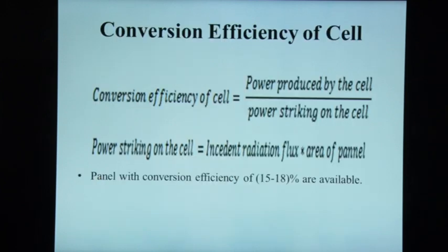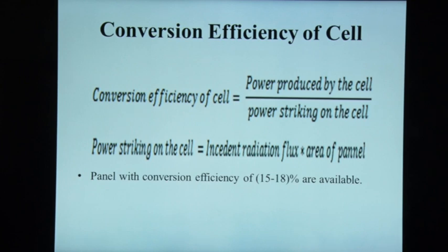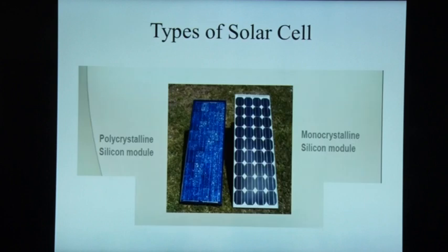The parameter of interest for a solar cell is conversion efficiency — the ratio of power produced by the cell divided by power striking the cell. Power striking the cell equals the incident radiation flux multiplied by the area of the panel. Panels with conversion efficiency of 15–18% are generally available. Two types of solar panels are used: mono-crystalline and poly-crystalline. Mono-crystalline is better in terms of efficiency.